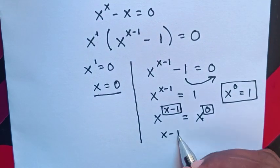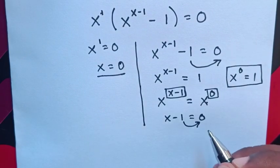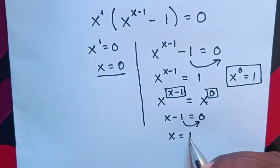Then, it will be x - 1 = 0. So, we take negative 1 to the right side, so x = 1.